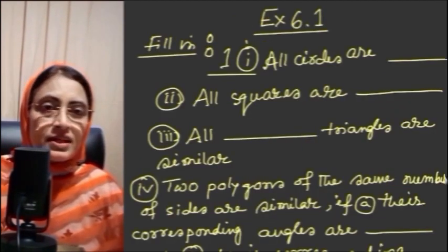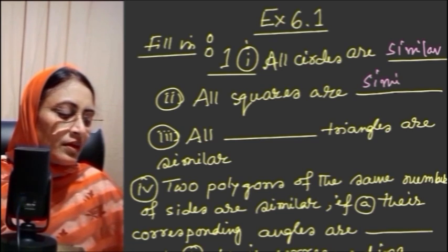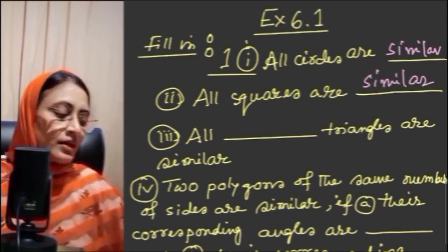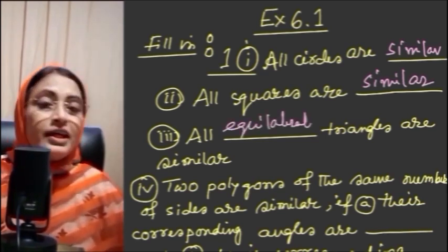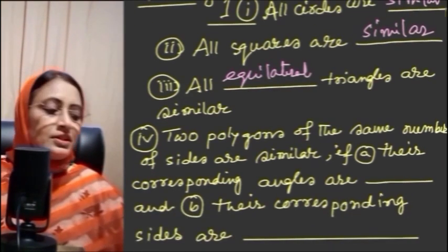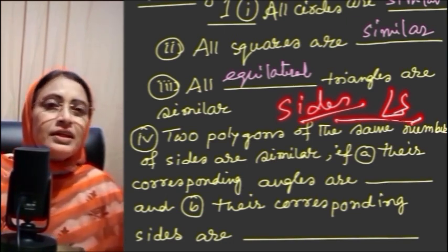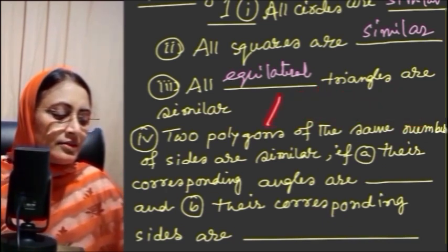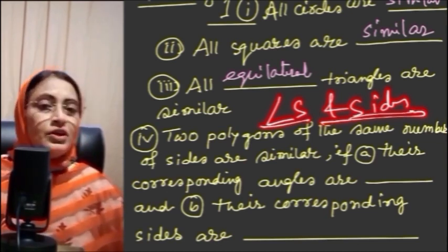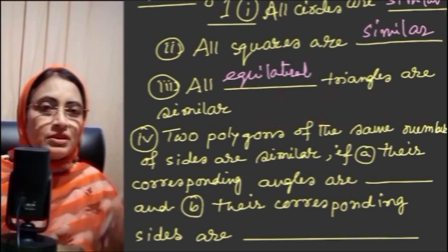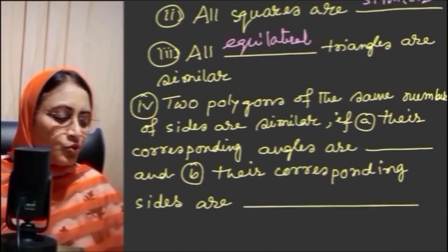All circles are similar, all squares are also similar — the shapes are the same and sizes may vary. All equilateral triangles are similar because all their angles are equal. In the case of comparing triangles, it entirely depends on angles and sides. Two polygons with the same number of sides are similar — polygons means more than two sides.